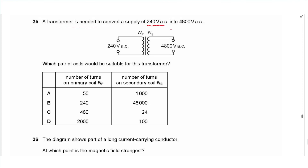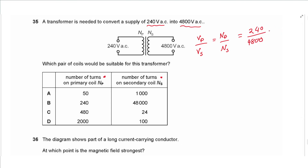Question 35 says: a transformer is needed to convert a 240 V AC supply into 4800 V AC. Which pair of coils would be suitable? The ratio of primary voltage to secondary voltage equals the ratio of primary turns to secondary turns: 240/4800 = 1/20. Dividing 50 by 1000 gives 1/20, which matches. The other options give 1/200 or 20, which are all wrong. The answer is A.